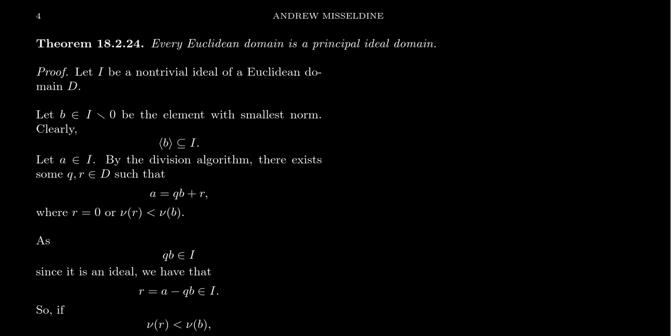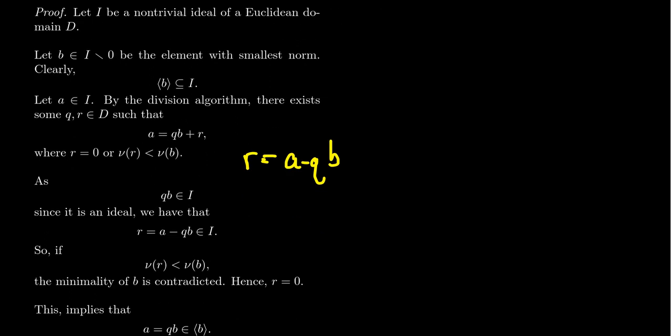Now since I is an ideal that contains B, the product QB must belong to the ideal. And so if you manipulate this equation this is the same thing as saying R is equal to A minus QB, for which A is inside the ideal by assumption. QB is inside the ideal since B is in the ideal. Therefore the difference A minus QB is inside of the ideal. That difference is this remainder R.